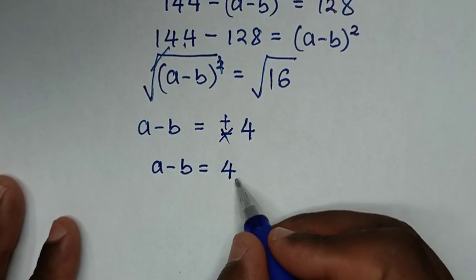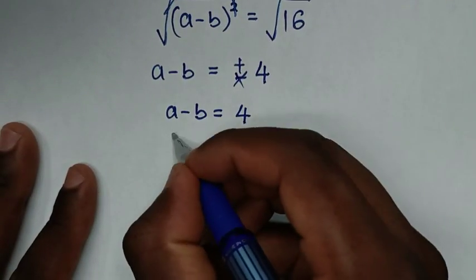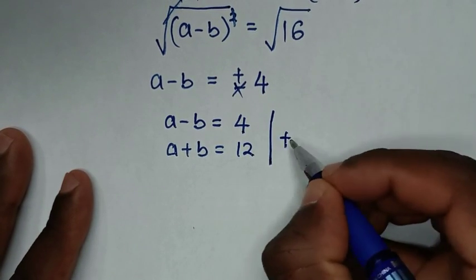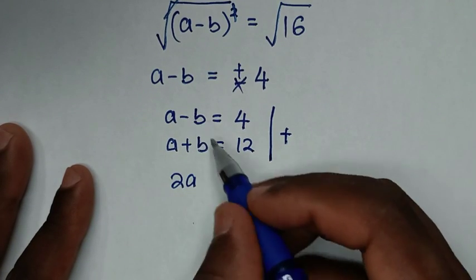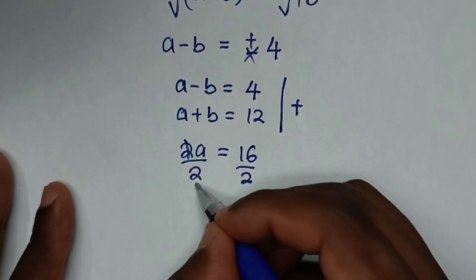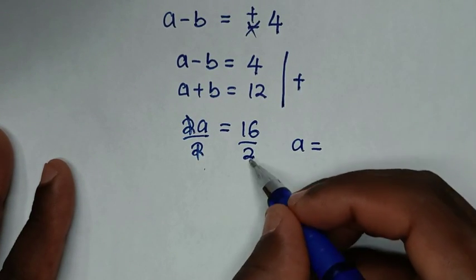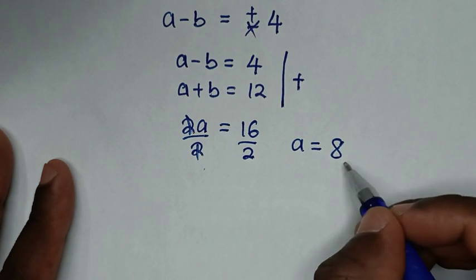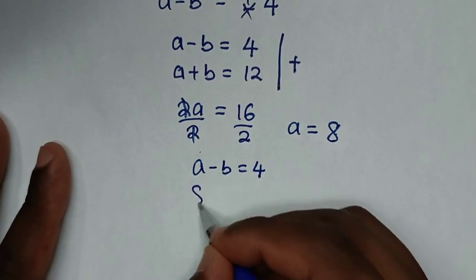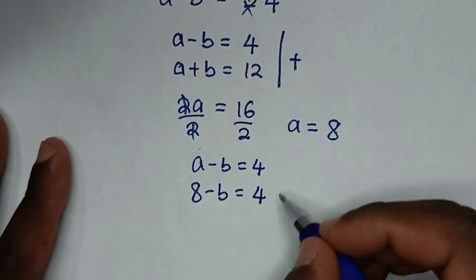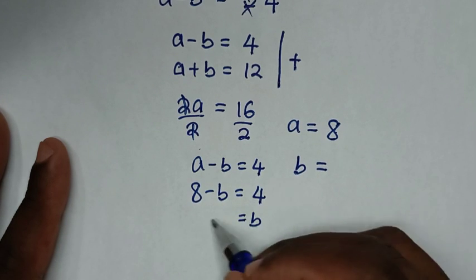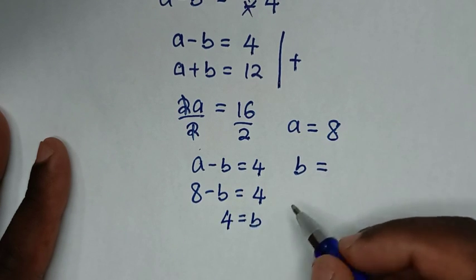From a minus b equals 4 and a plus b equals 12, we solve by elimination. Adding the two equations: 2a equals 16, so dividing by 2, a equals 8. To find b, we substitute a equals 8 into a minus b equals 4: 8 minus b equals 4, so b equals 8 minus 4, which is 4. Therefore b equals 4.